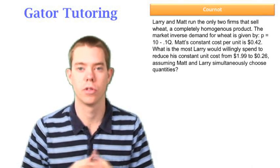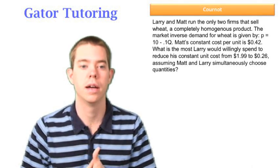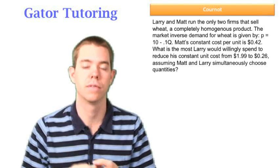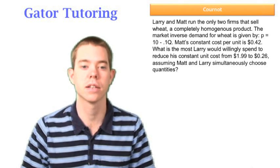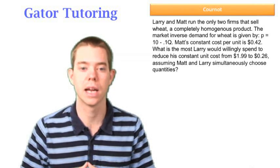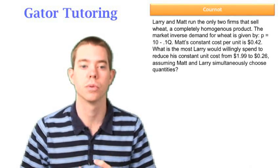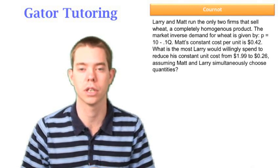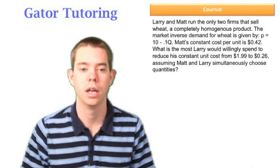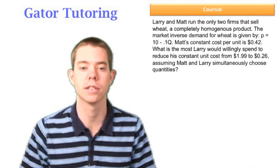Again, we're looking at Larry and Matt, the only firms that sell wheat, and now they've given us the inverse demand for wheat, they've given us Matt's constant cost, and they're asking what is the most that Larry would be willing to spend to reduce his constant unit cost from $1.99 to $0.26. And again, we're assuming that they simultaneously choose quantities.